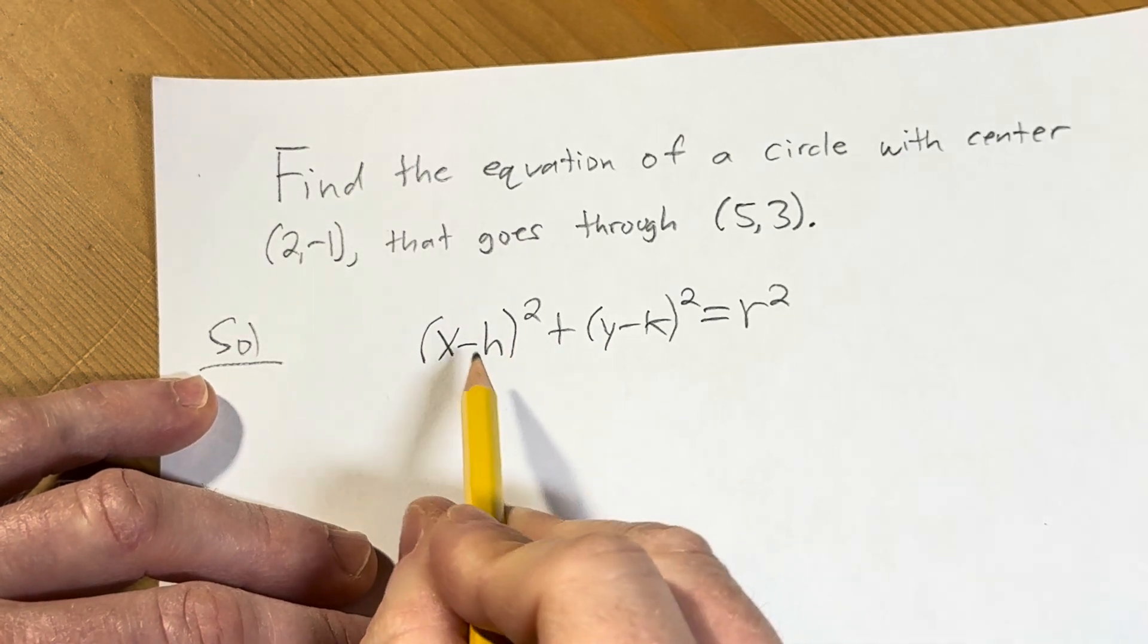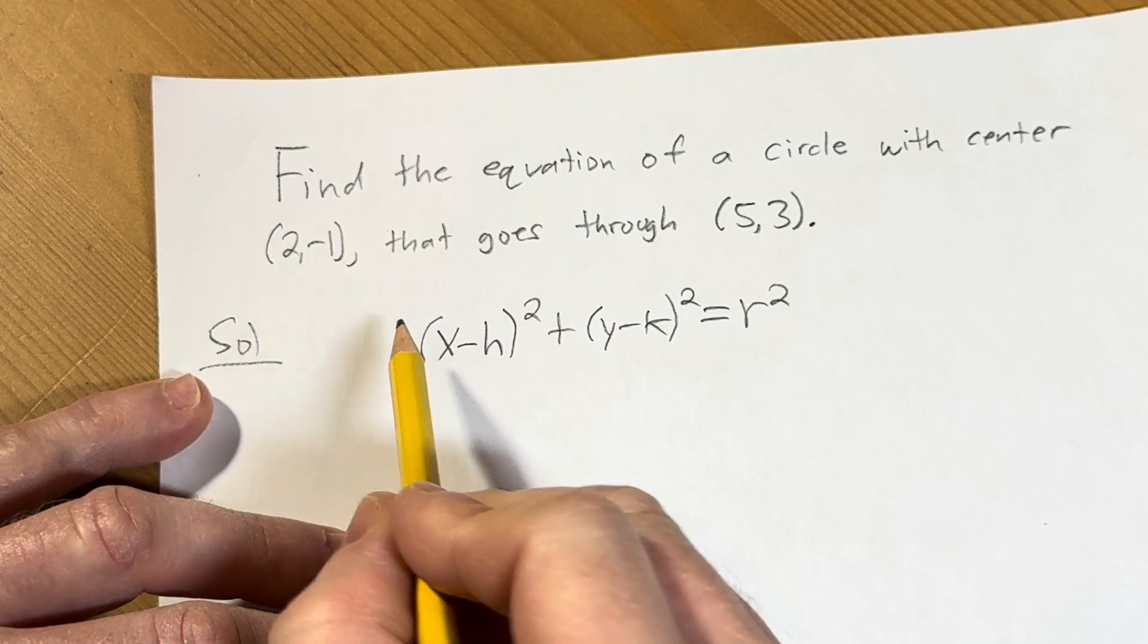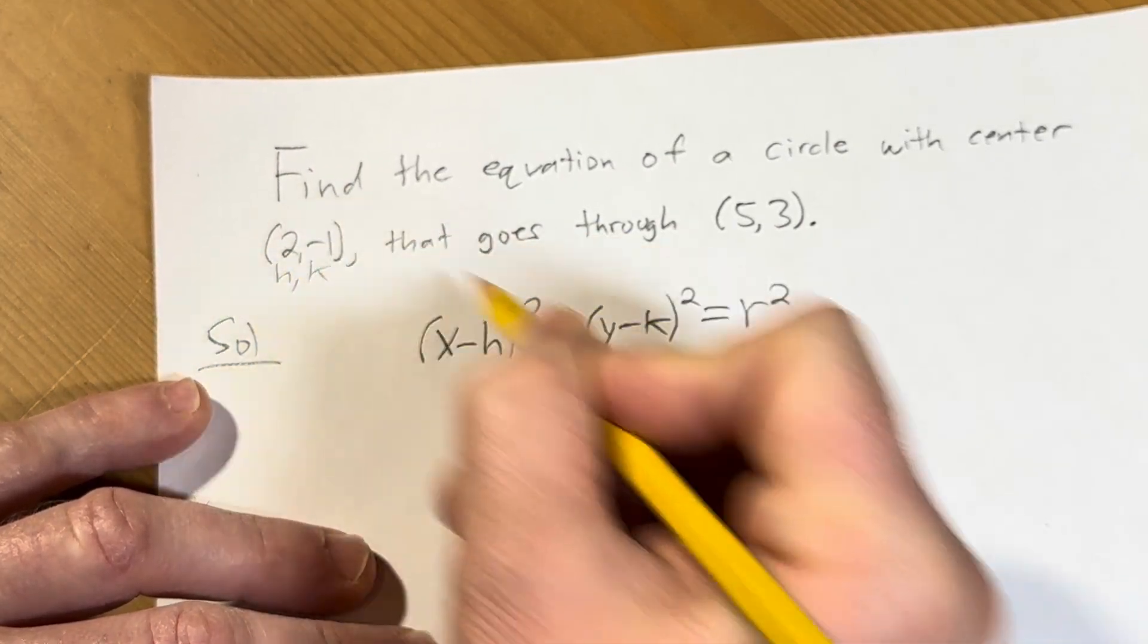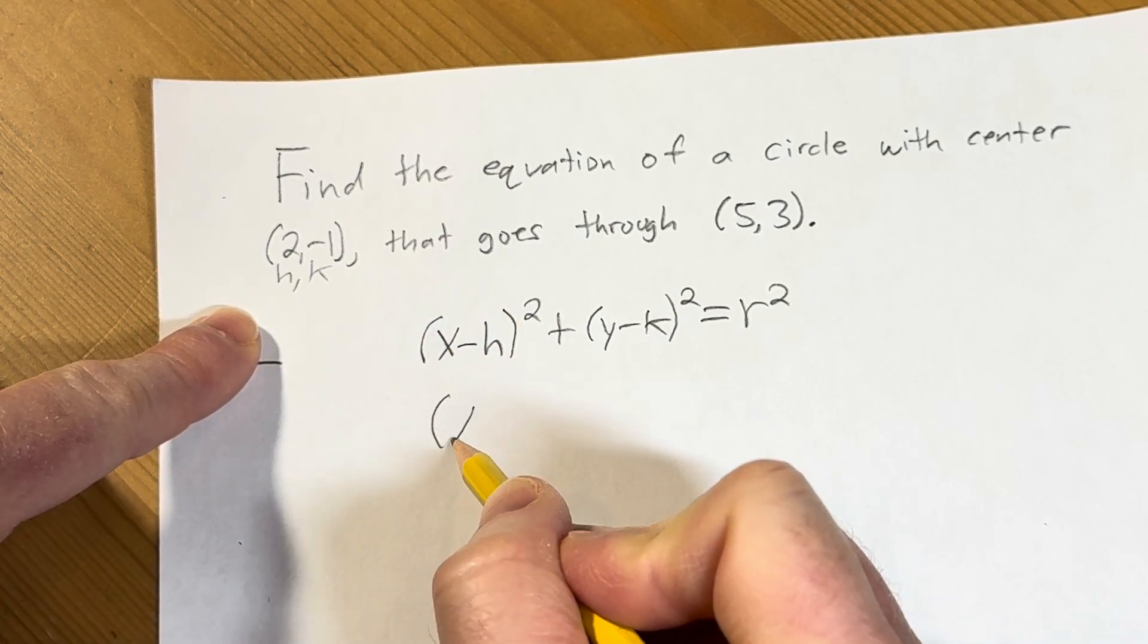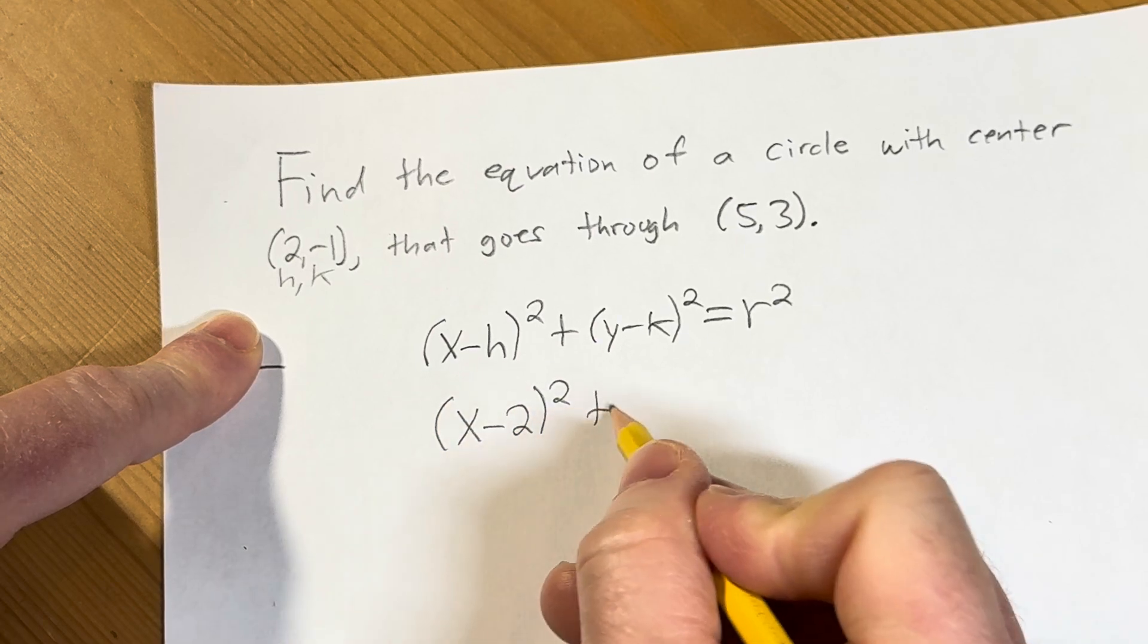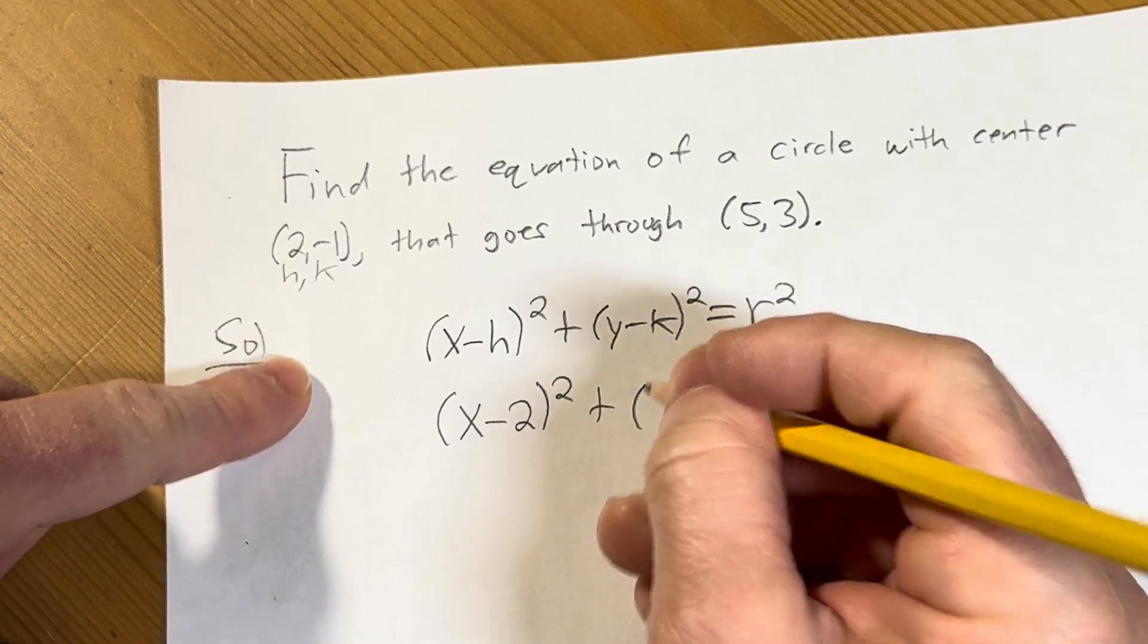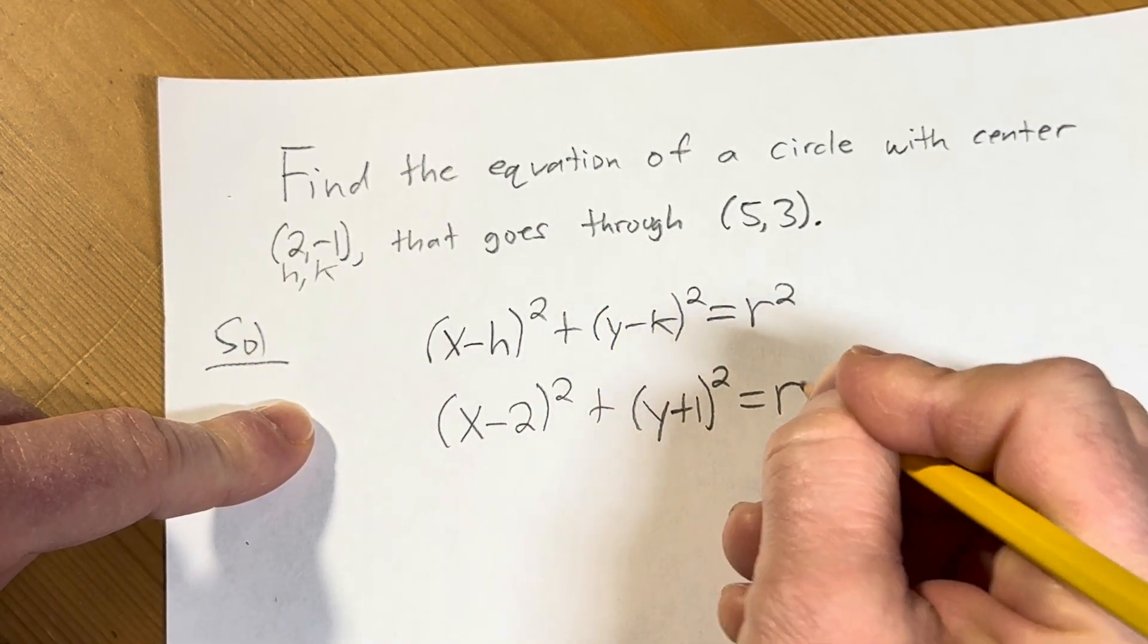Okay, so now what we can do is we can replace h and k with the actual numbers, right? So we have h, k. So h is 2 and k is negative 1. So let's go ahead and do that. So it'll be (x - 2)² plus y minus k. However, the k is negative 1, so it'll be plus 1, and that quantity is squared equals r².